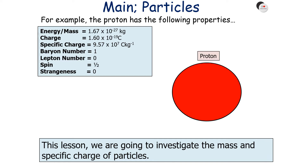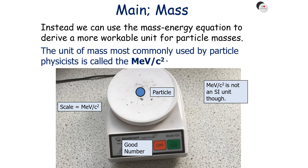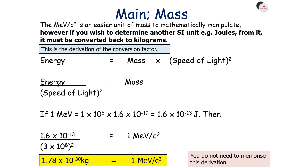The first property we're going to look at is mass. One method of differentiating between particles is by measuring their mass. However, we find the SI unit of mass, the kilogram, to be very difficult to work in, because on the scale of kilograms any particle mass is going to be very, very small. Instead, we use the mass-energy equation to derive a more workable unit for particle masses. The unit of mass most commonly used by particle physicists is called the MeV/c², which gives a nice workable number in terms of particles and is easier to mathematically manipulate.